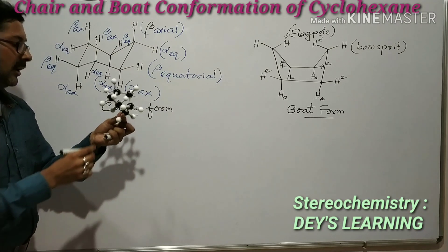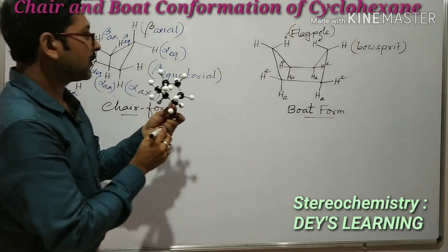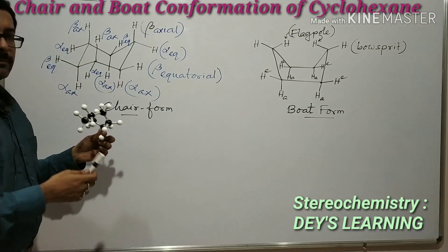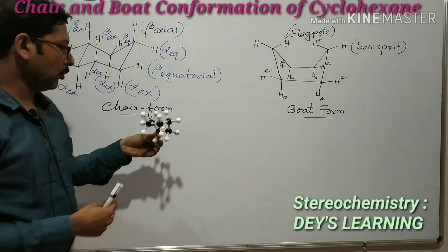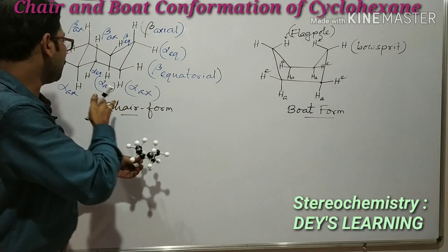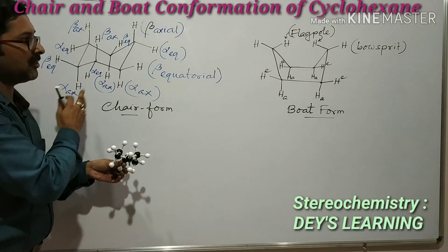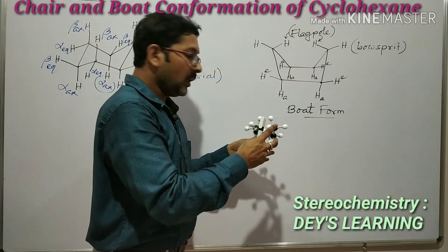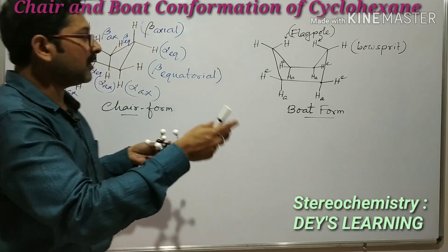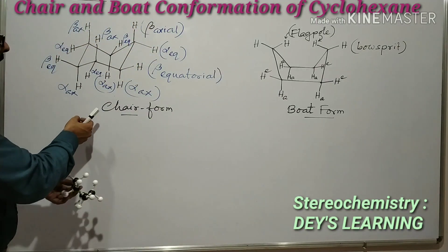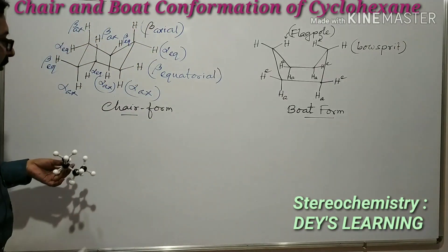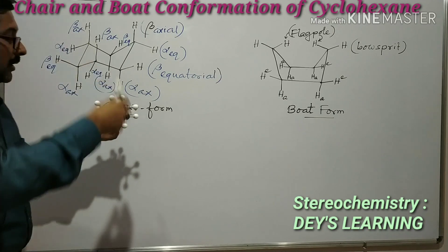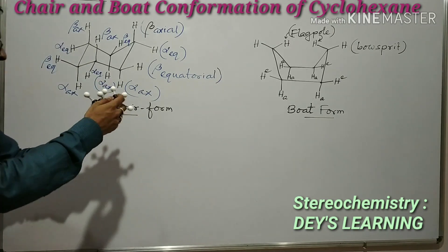And the other hydrogen atoms — one, two, three, and four — are the equatorial boat hydrogen atoms. It is generally known that the chair conformation is much more stable than the boat conformation. Now what is the reason behind it?